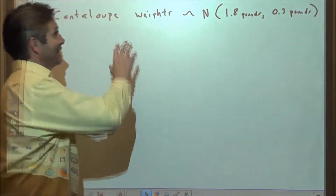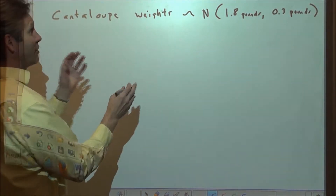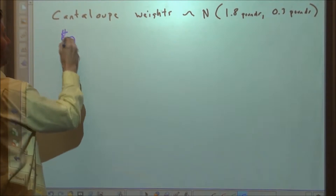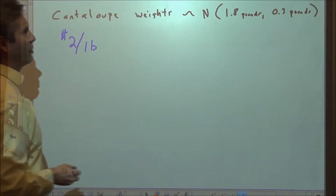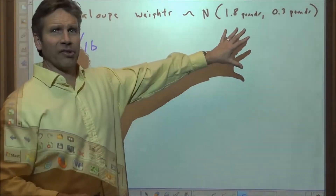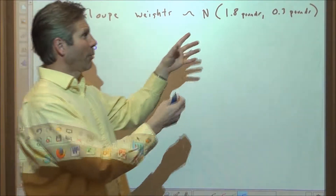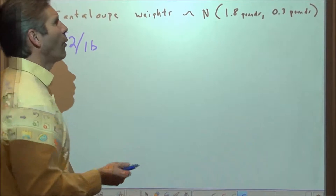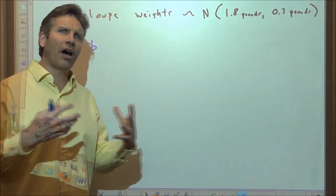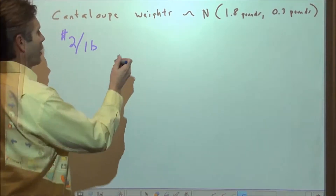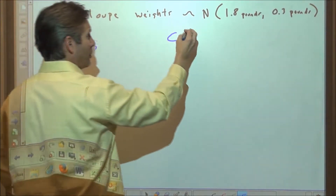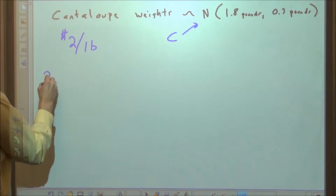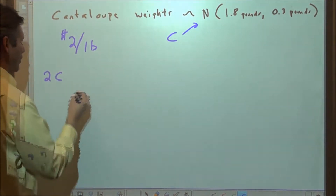We're going to do a linear transformation on this. Let's suppose that the cantaloupes are selling for $2 a pound. This distribution represents the weights of the cantaloupes — they fluctuate, averaging 1.8 pounds with a standard deviation of 0.3. But we want to talk about the distribution of the cost of the cantaloupe, so we're going to take this random variable C and multiply it by 2 to get the cost.